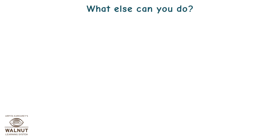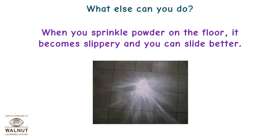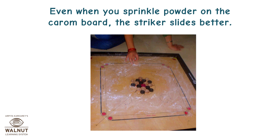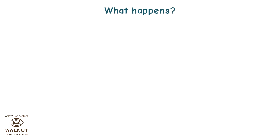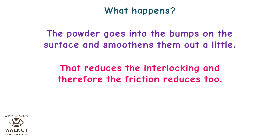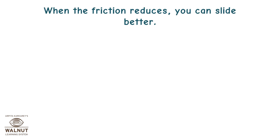What else can we do? When you sprinkle powder on the floor, it becomes slippery and you can slide better. Even when you sprinkle powder on the carom board, the striker slides better. What happens? The powder goes into the bumps on the surface and smoothens them out a little. That reduces the interlocking and therefore the friction reduces too. When the friction reduces, you can slide better.